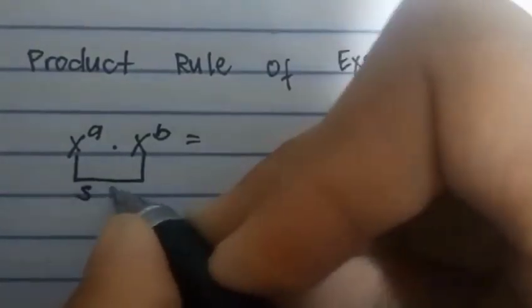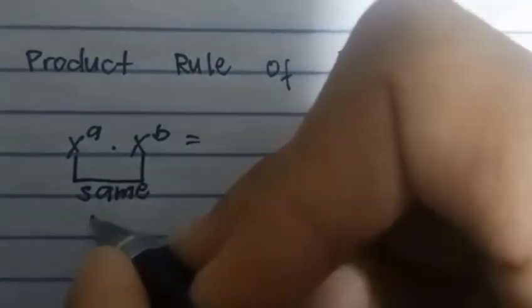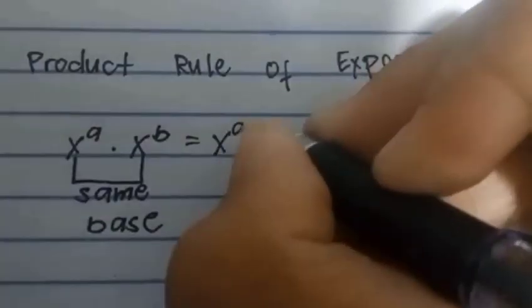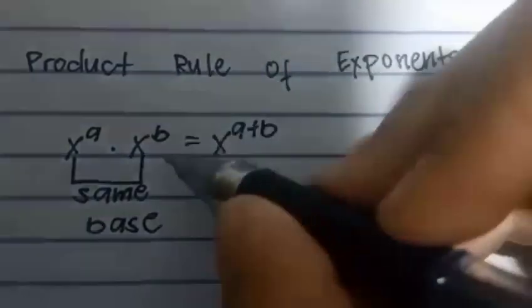Rule of exponent: x to the a times x to the b is equal to, same base so we just copy the base. So x to the a plus b.